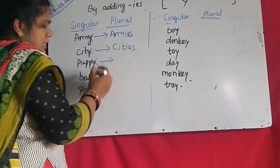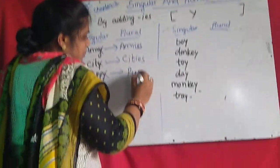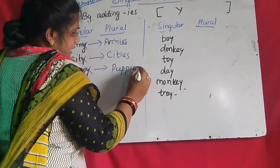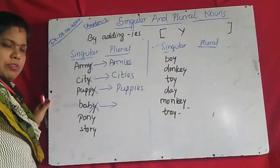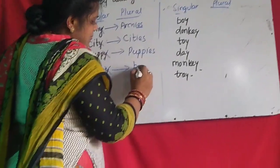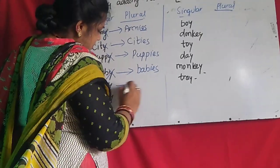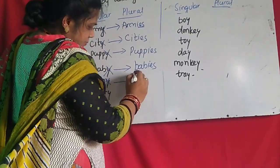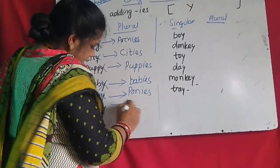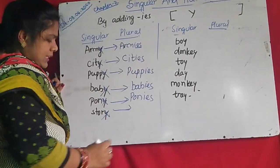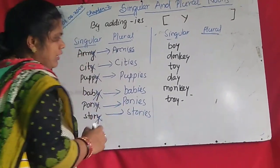'Puppy' — here also the same, Y will be removed — C-U-P-P-I-E-S: 'puppies.' 'Baby' — Y will be removed — B-A-B-I-E-S: 'babies.' 'Pony' — P-O-N-I-E-S: 'ponies.' 'Story' — Y will be removed — S-T-O-R-I-E-S: 'stories' in plural form.